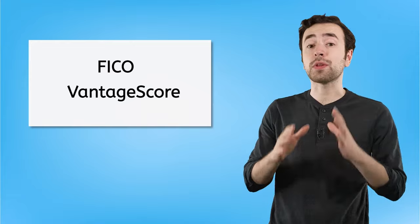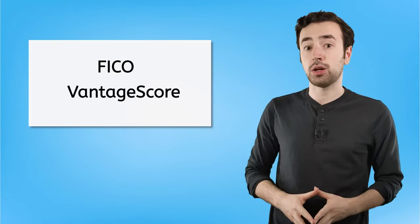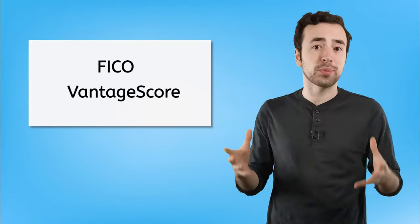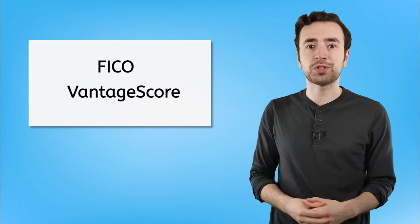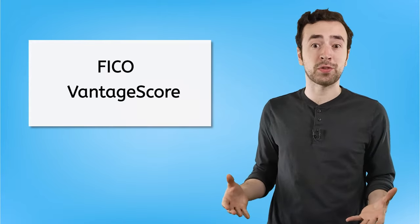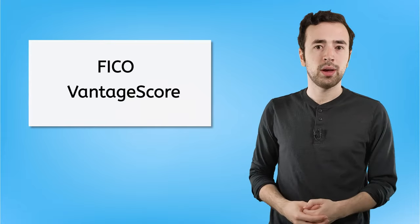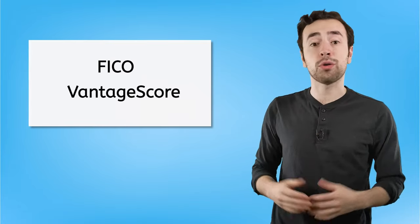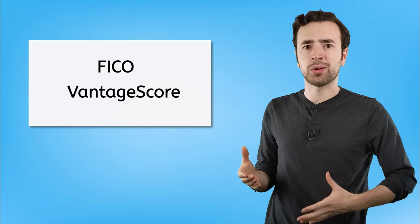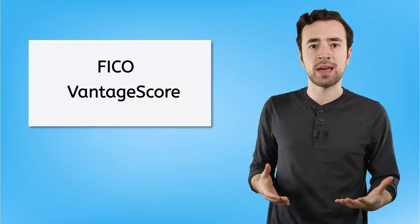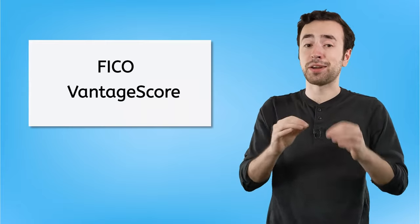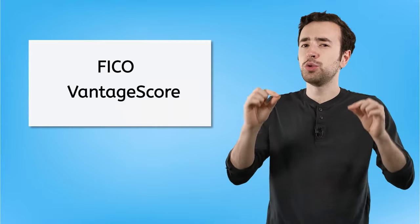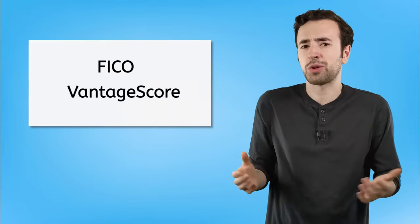FICO and Vantage score are the two main companies that collect all the information from your credit report in order to calculate your credit score, which summarizes how risky it would be for someone to lend money to you. That's why some people will call their credit score their FICO score or their Vantage score. And like I said before, these are different companies. They have slightly different ways of calculating your score, so they might give you two slightly different credit scores, and that's totally okay.